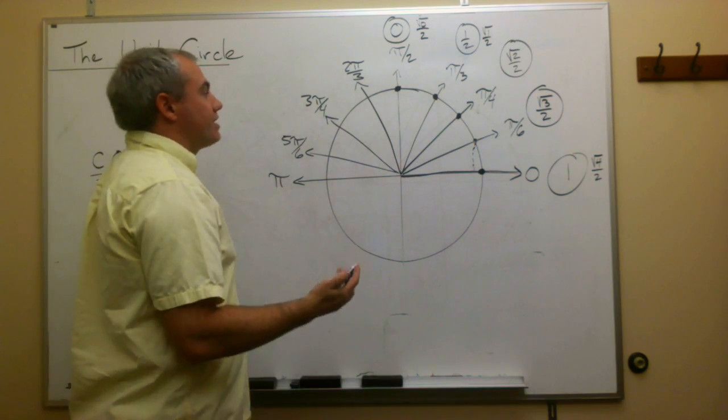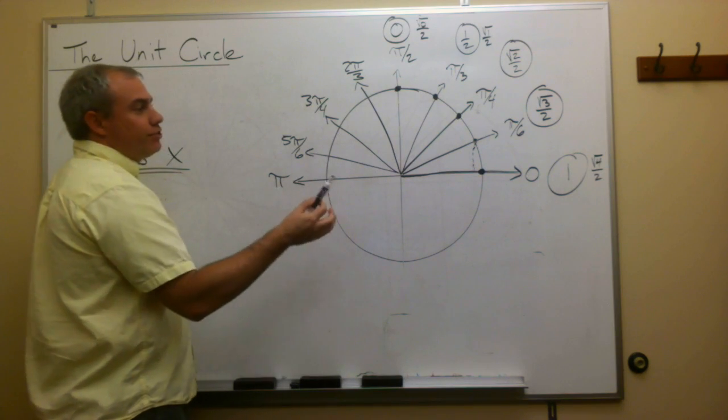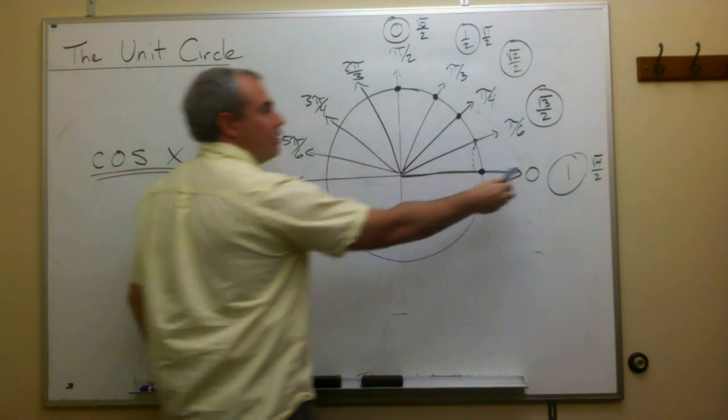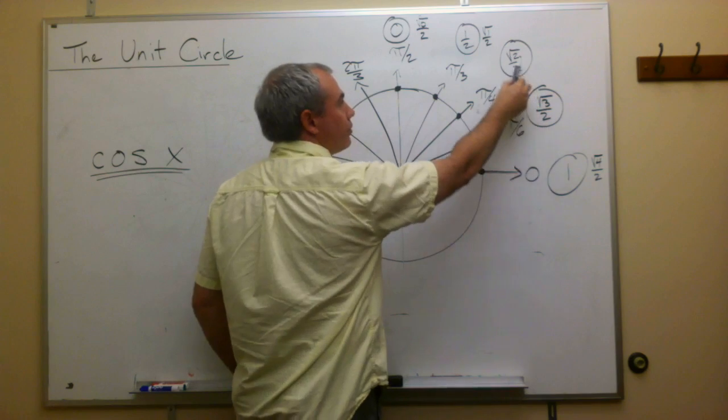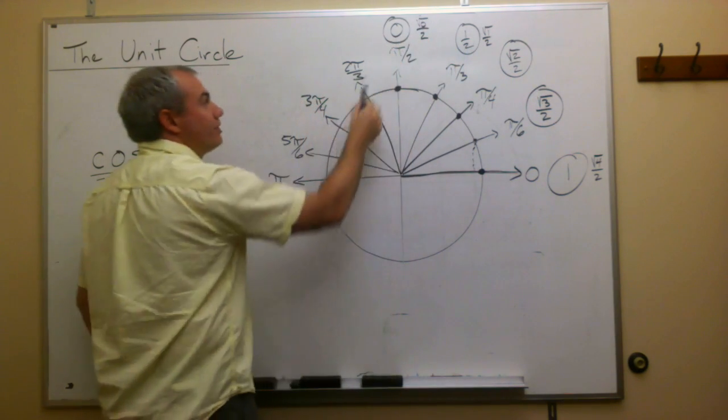We can fill these in because we know that over here x is negative. But we just use this same step process. We've got square root of 4, square root of 3, square root of 2, square root of 1, square root of 0. And what should come next?